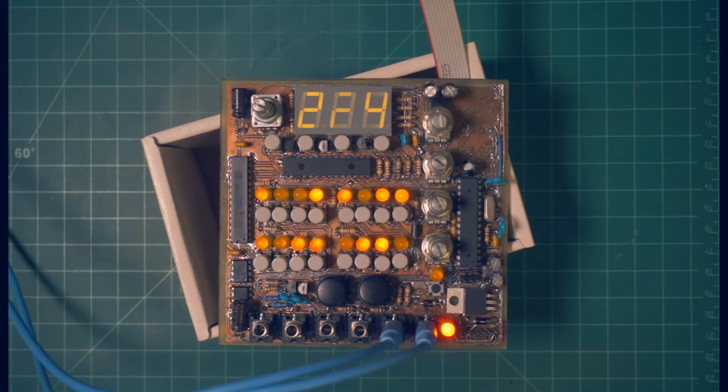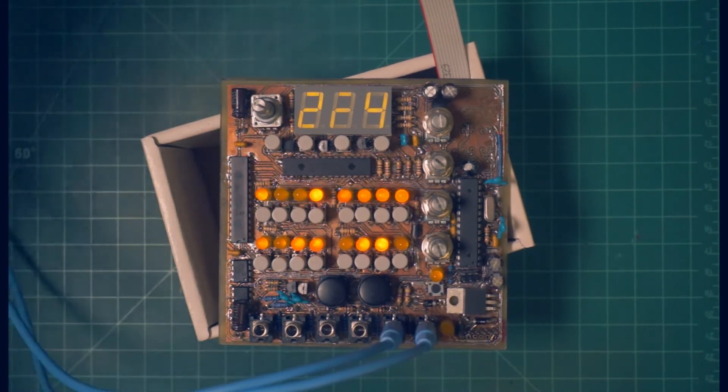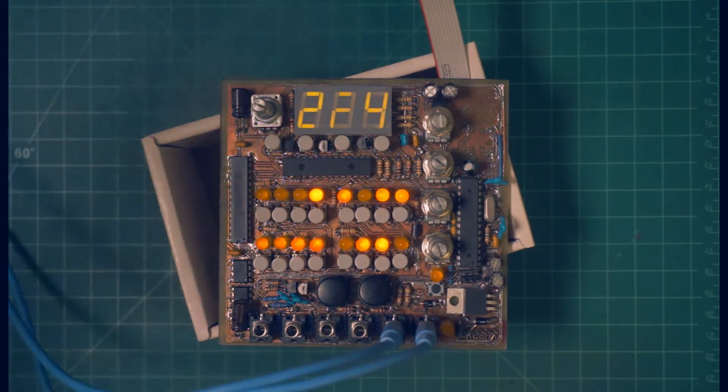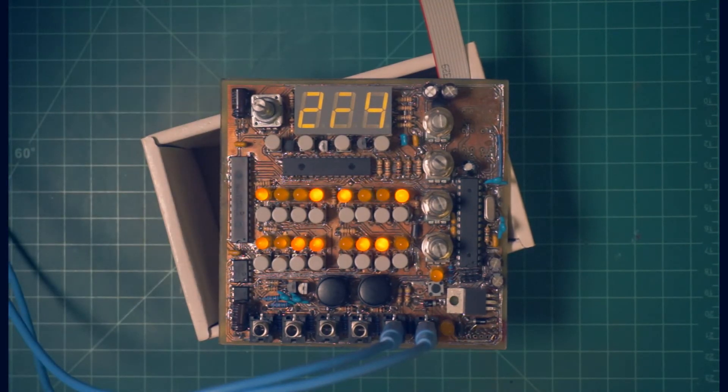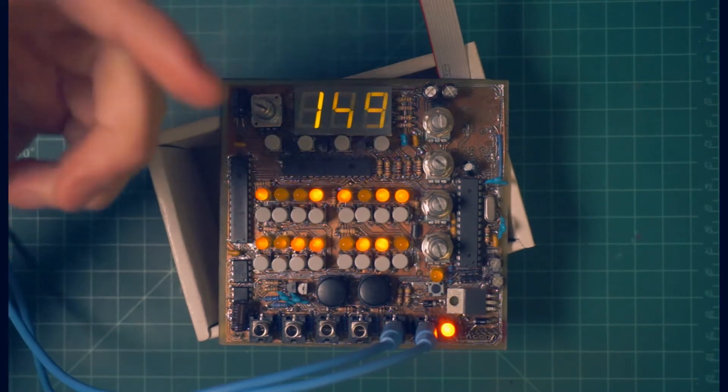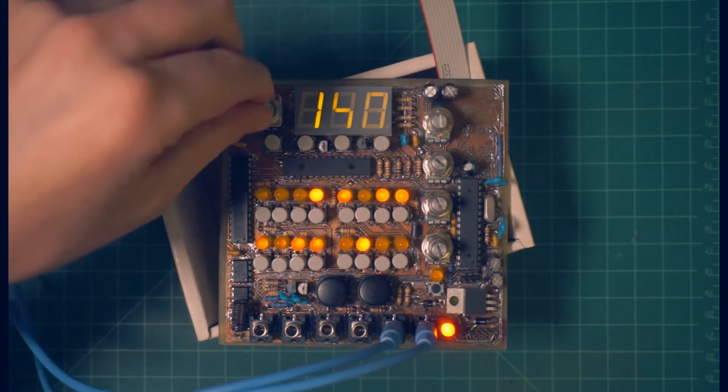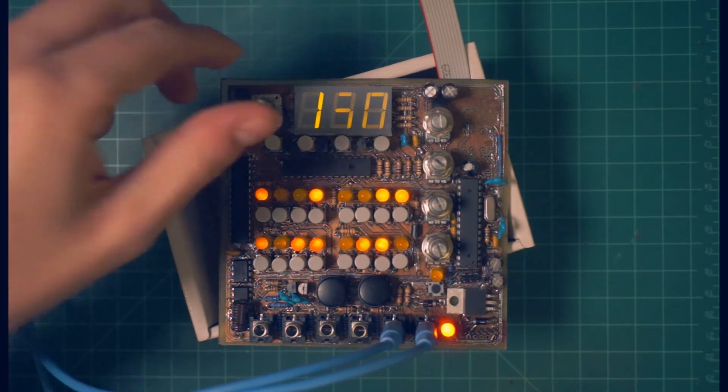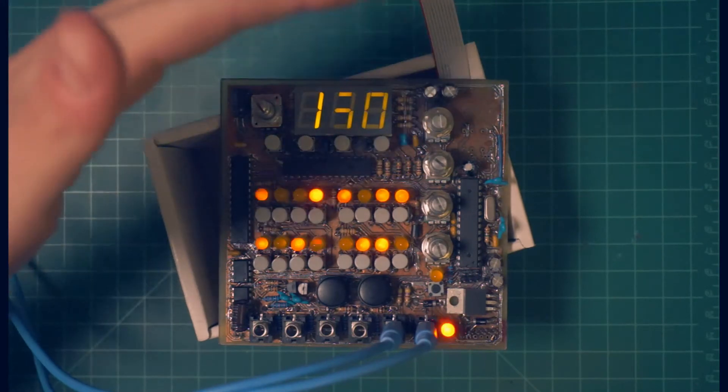So by using the decay parameter here, we can create staccato and legato phrases within the same sequence. And by using our envelope generator, we can take even more control of the way that they're articulated. Using our rotary encoder, we can control additional parameters like tempo. Right now, this is just the number of milliseconds between steps, not the actual BPM.